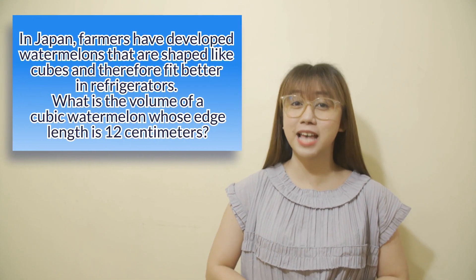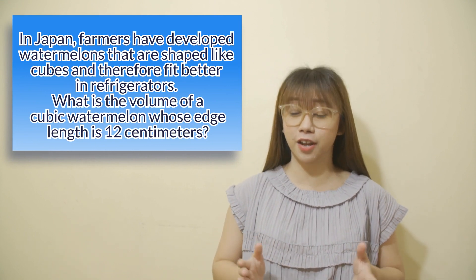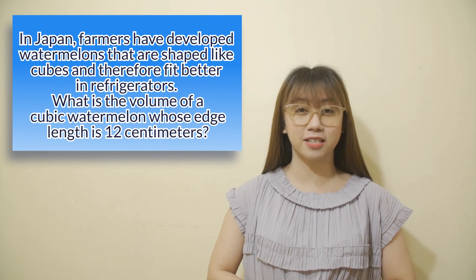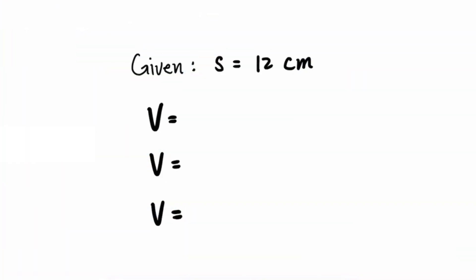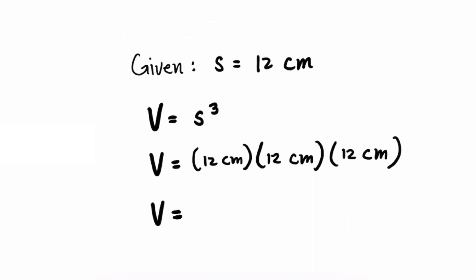In Japan, farmers have developed watermelons that are shaped like cubes and therefore fit better in refrigerators. What is the volume of a cubic watermelon whose edge length is 12 centimeters? The given is S equals 12 centimeters. The formula is volume equals S cubed. Substituting: 12 cm × 12 cm × 12 cm. The volume of a cubic watermelon is 1,728 cubic centimeters.